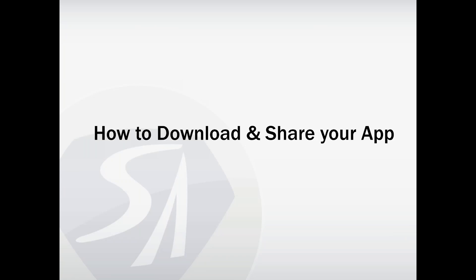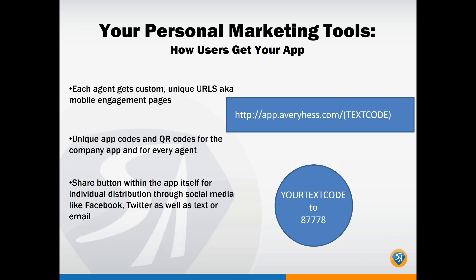Now let's talk about downloading and sharing your app. Everyone has a unique text code as well as a unique URL. Your unique URL starts with app.averyhuss.com forward slash your text code. You can also text your text code to 87778 to receive a download link.